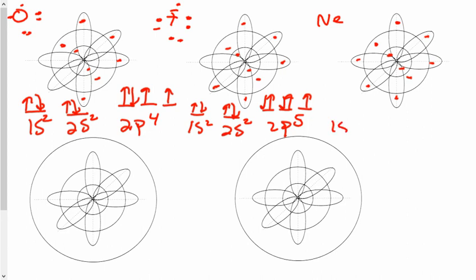So then I have 1s2, arrow up, down, 2s2, arrow up and down, and then 2p6. We have three lines for that. We go 1, 1, 1, and then we have to pair each of them like that.